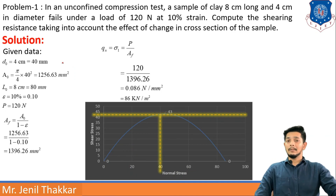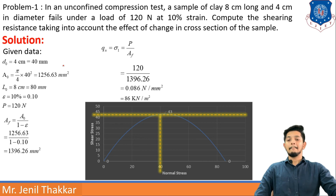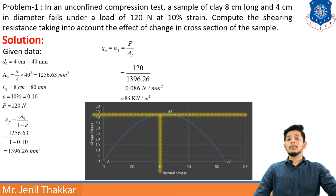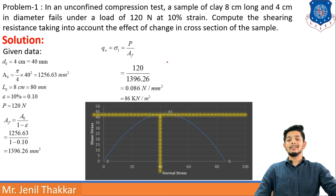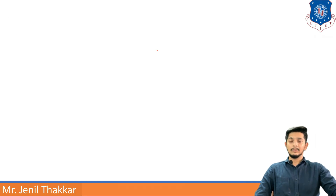Now I will plot a graph of shear stress versus normal stress. Since qu = 86 kN/m², I draw a semicircle with diameter qu = 86, dropped from the origin. The center will be at 43, and the top of the semicircle — which is the value of shearing resistance — will also be 43 kN/m². So the shearing resistance is 43 kN/m². We will continue with the second problem in the next video. Thank you.